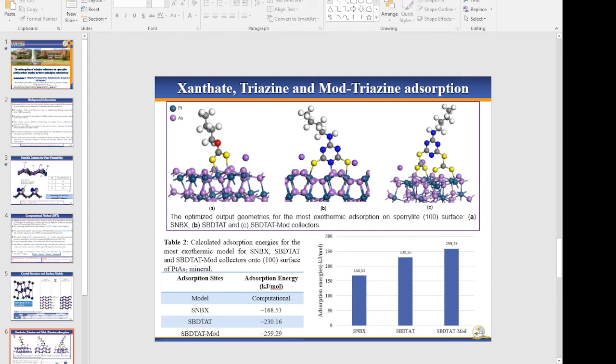It was clearly shown that xanthate, triazine, and triazine-modified collectors prefer to bridge on platinum and arsenide atoms through sulfur atoms. This also showed that molecules with nitrogen bind stronger than molecules with oxygen.